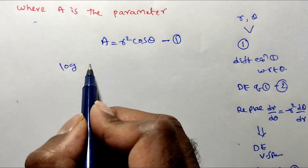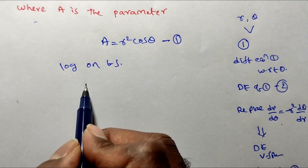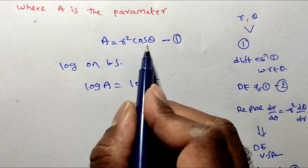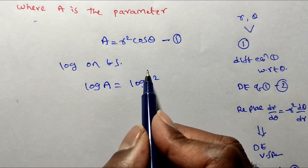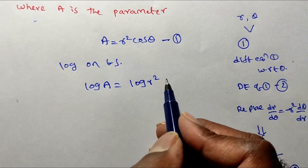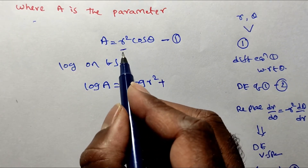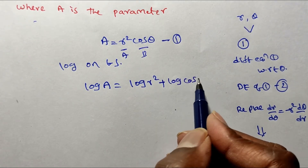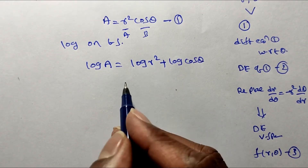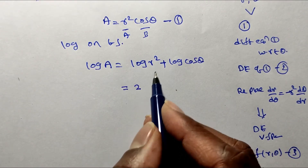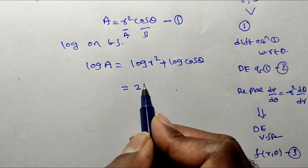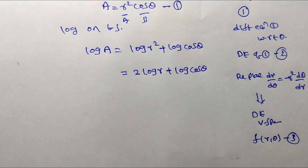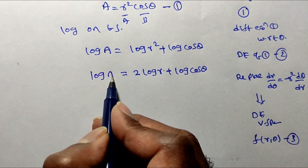Taking log on both sides: log a = log(r² · cos θ). Using the formula log(ab) = log a + log b, we get log a = log r² + log cos θ. Then applying the power rule, log rⁿ = n log r, this becomes log a = 2 log r + log cos θ. Consider this as equation number two.